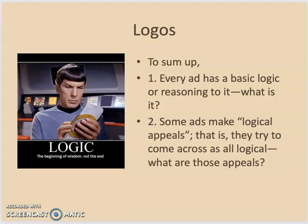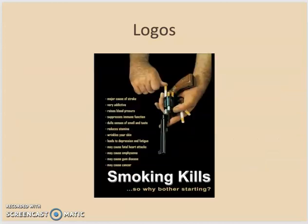Here's another example of logos — there's definitely pathos here for sure, but it's also very much logos driven. All the items listed on the left are basically a listing of facts: this is what happens if you smoke. So it's got a very significant logical appeal, but it's also very much pathos driven — there's a gun, cigarettes, and the color black here is very striking.